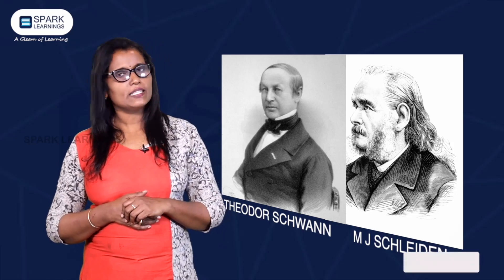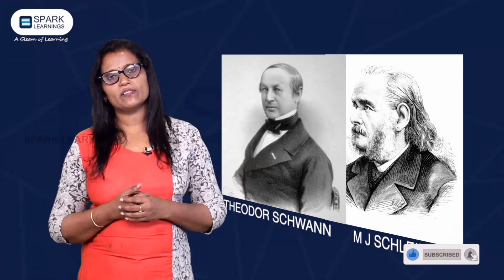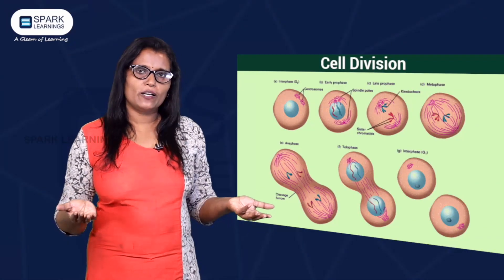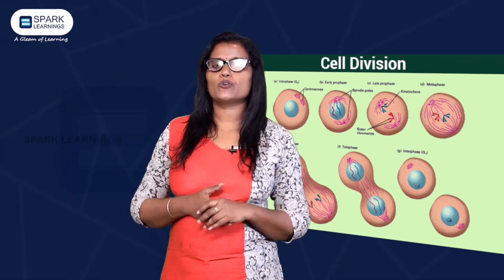The cell theory states that cells are the basic unit of life in all plants and animals. Rudolf Virchow later proposed that a new cell is formed only from a pre-existing cell, by cell division.